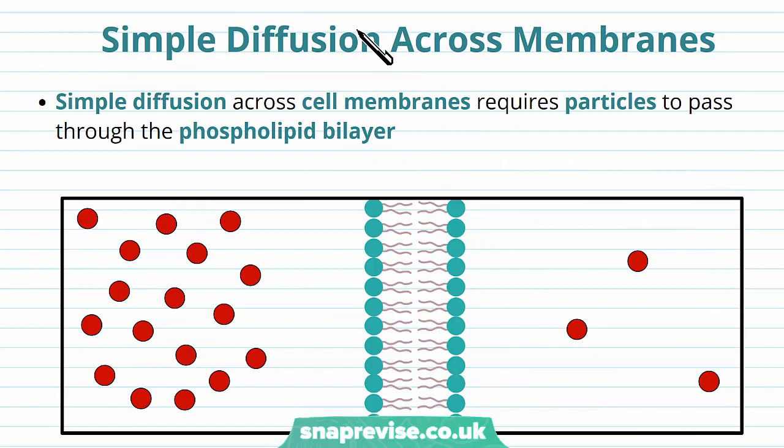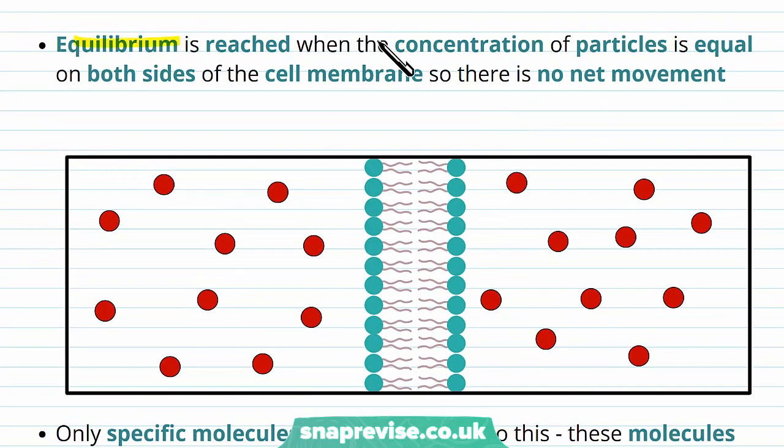Simple diffusion doesn't just happen in a container with nothing in it, it can occur across membranes as well. So simple diffusion across the cell membrane needs the particles to pass through the phospholipid bilayer. And remember, the membrane can act as a boundary from one part of the cell to another, or from the outside of the cell to the inside. But in order to get around this, they have to go through the membrane itself. So the equilibrium is reached again when the concentration of particles is equal on either side of that cell membrane, so there's no net movement.